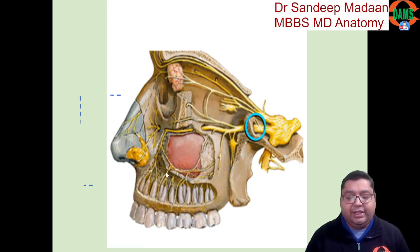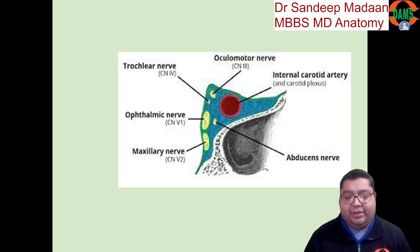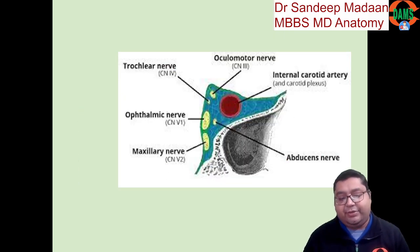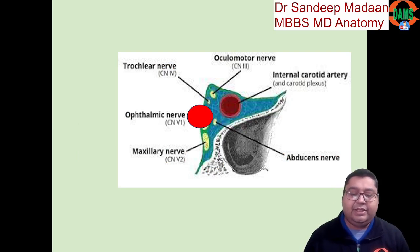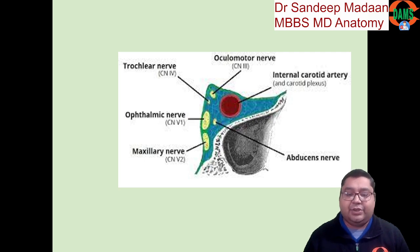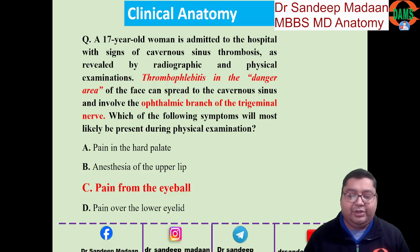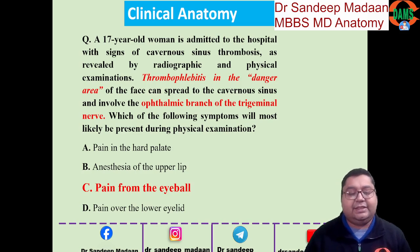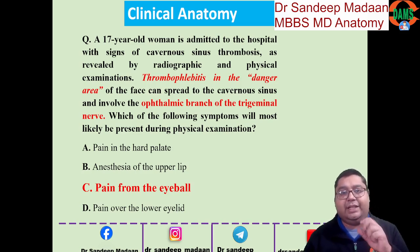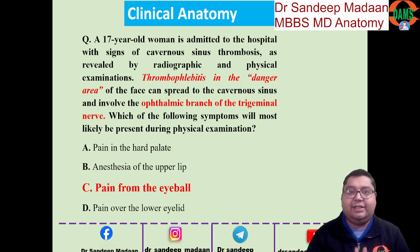Among the given options, the question states that the ophthalmic nerve is involved because of the cavernous sinus thrombosis. Other nerves are not involved, so the only region affected will be the eyeball region — pain from the eyeball can be expected. However, hard palate anesthesia, upper lip, and lower eyelid are regions for V2. Since the maxillary nerve is not involved, those findings will not be seen.